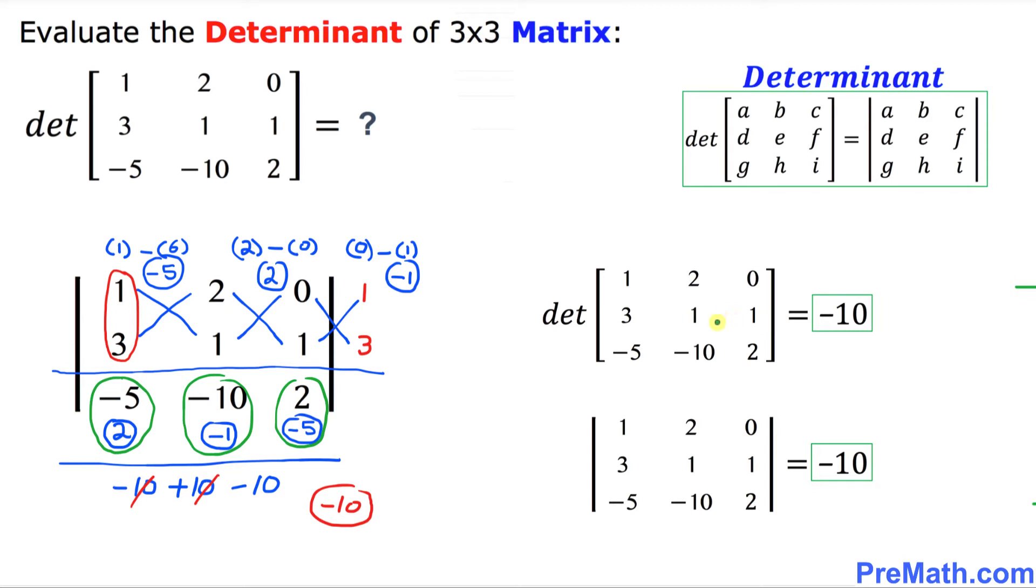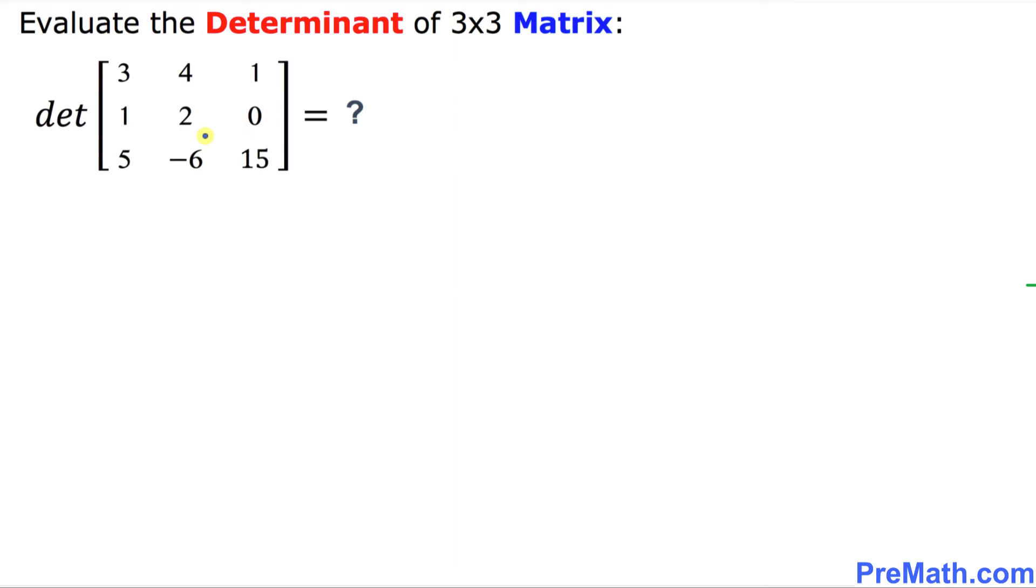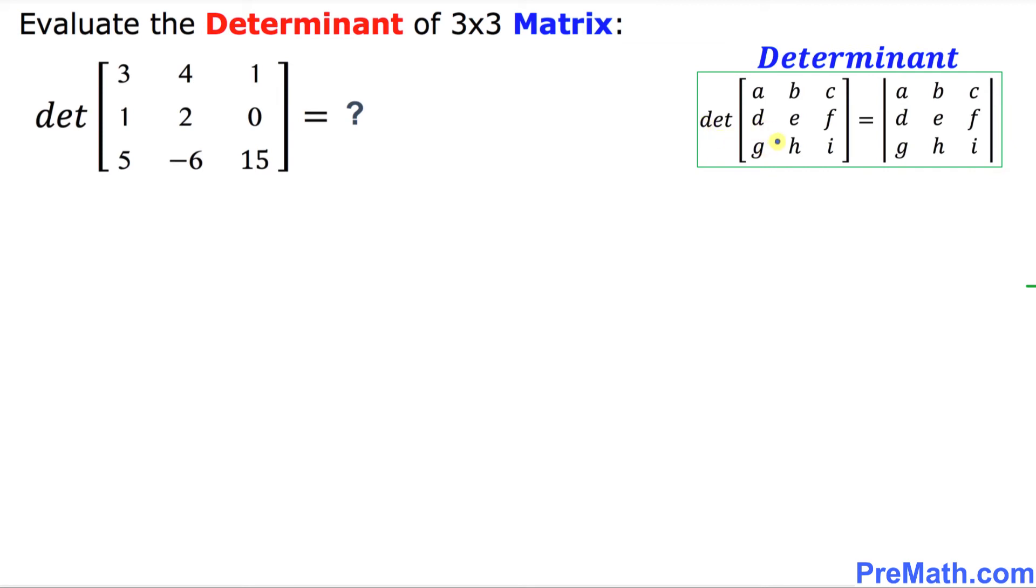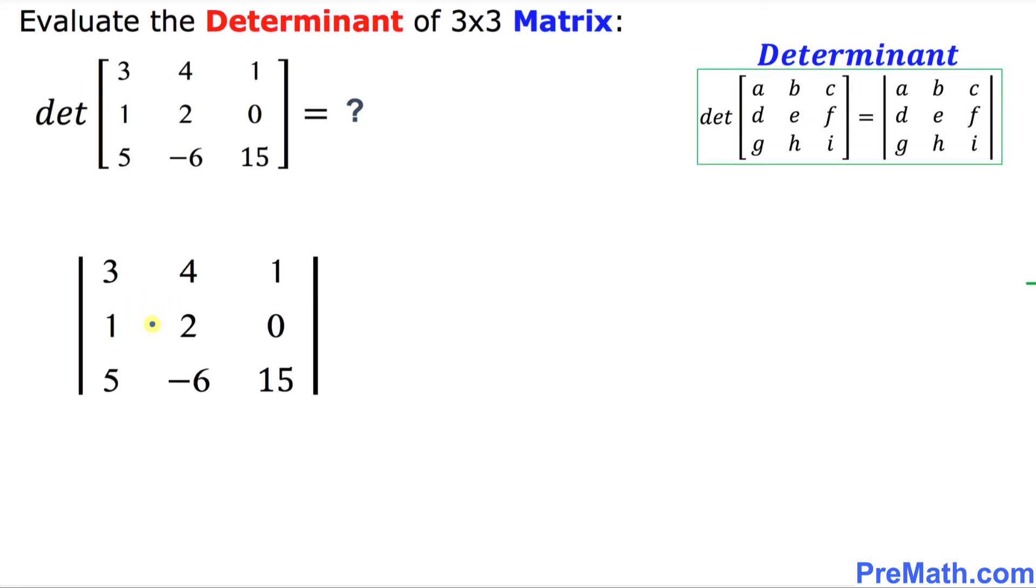Here is our next example. We are going to find the value of this determinant of this given 3 by 3 matrix. The determinant can be represented by these vertical straight up lines, as you can see over here. Here I have written down this determinant and let's go ahead and evaluate it.